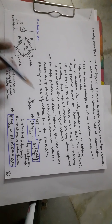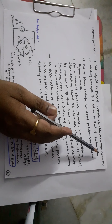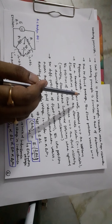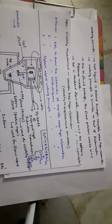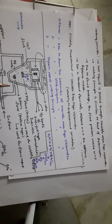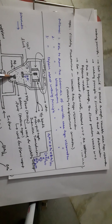Coming to the working principle: the test liquid is passed through the variable area type viscometer, working similarly to a rotameter. Due to fluid passage, the float position varies with respect to a reference mark. The float moves up and takes a sustained position where the upward force equals the downward force, which is the same equilibrium principle as in the rotameter.